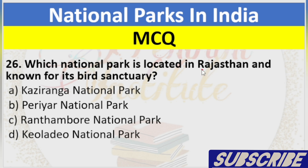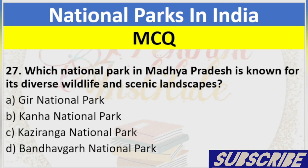Question 26: Which National Park is located in Rajasthan and known for its bird sanctuary? A. Kaziranga National Park, B. Periyar National Park, C. Ranthambore National Park, D. Keoladeo National Park. Answer: D. Keoladeo National Park.